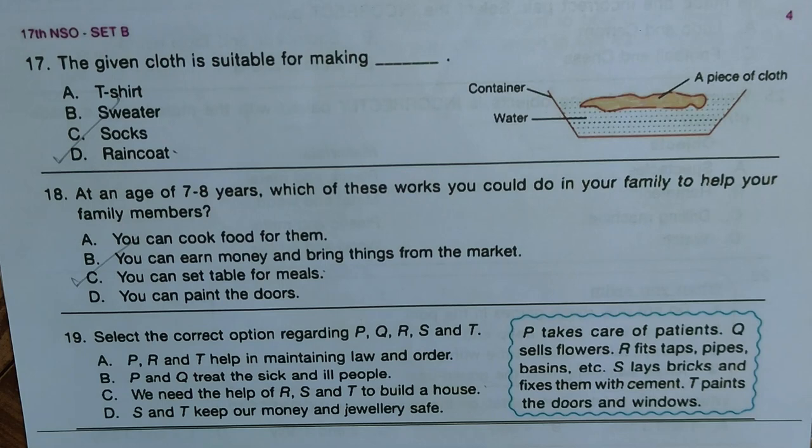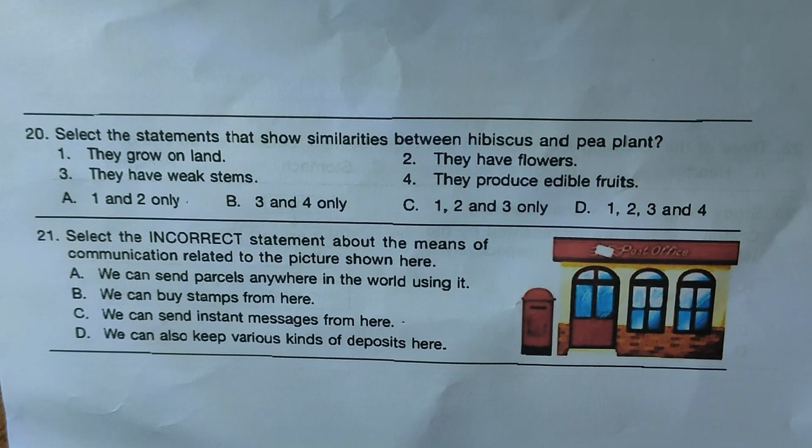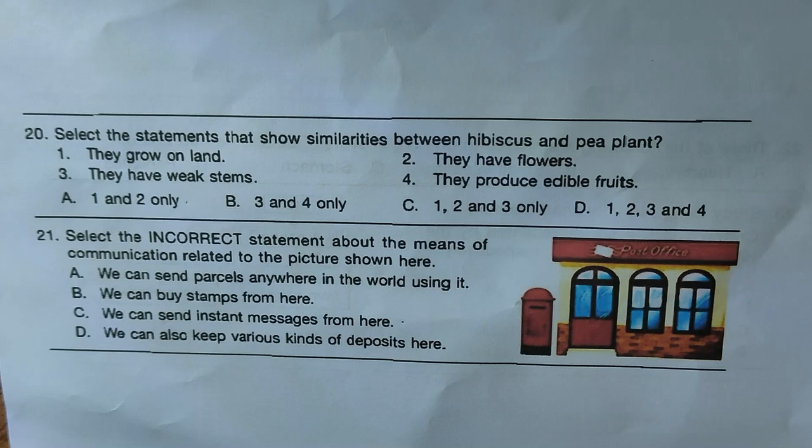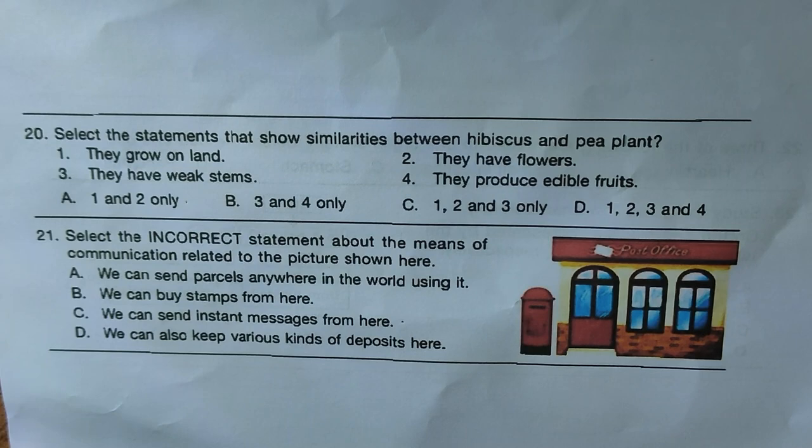Question twenty: select the statement that shows similarities between a hibiscus and a pea plant. Statement 1 — they grow on land; Statement 2 — they have flowers; Statement 3 — they have weak stems; Statement 4 — they produce edible fruits. The correct statements are 1 and 2 only, which is option A. Hence we mark A as the right answer.